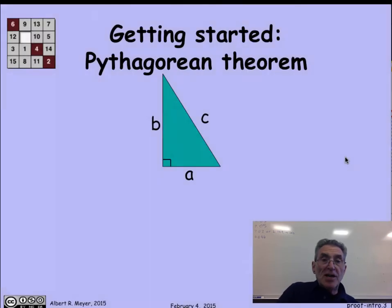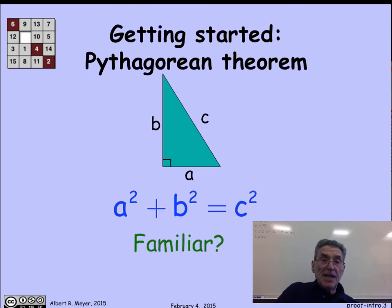We'll look at a famous theorem that you've all seen from early on in high school, the Pythagorean theorem. It says that if I have a right triangle with sides A and B and hypotenuse C, then there's a relationship between A, B, and C, namely that a² + b² = c². Now this is completely familiar, but is it obvious?